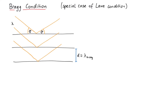The condition for constructive interference between the outgoing waves of two layers is that they have the same phase. In other words, the path that the lower wave traveled more than the upper wave, here drawn in red, has to be an integer multiple of the wavelength lambda.